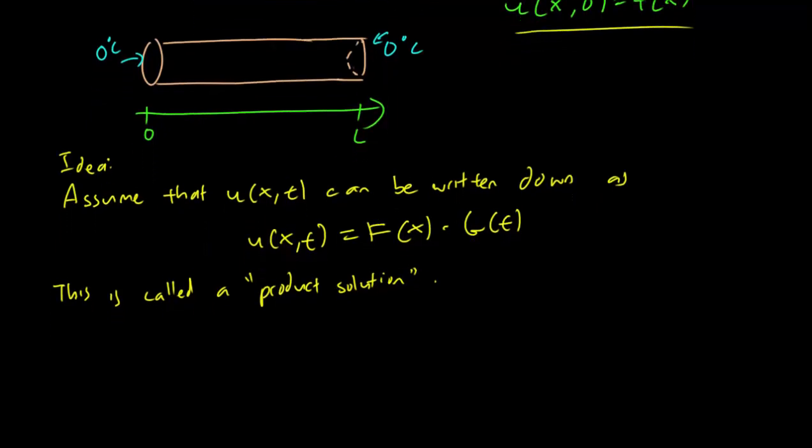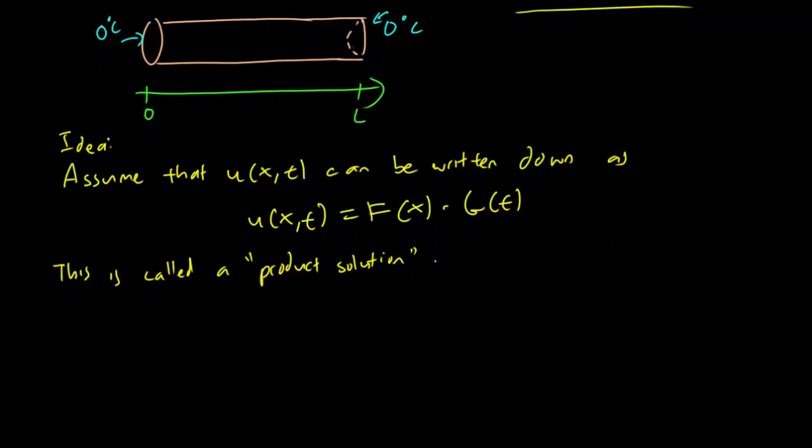So why do we do this? First of all, we should clarify that F(x) is constant in t. F(x) doesn't change with respect to time and G(t) is constant in x. So G(t) doesn't change with respect to space. So we have two parts of the solution that are independent of each other.